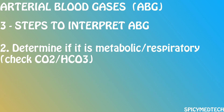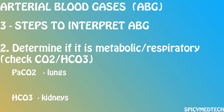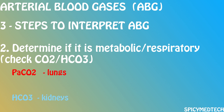Step 2: Determine if it is a metabolic or respiratory alkalosis or acidosis. For this step, we only have to check CO2 and HCO3. Quick recap: PaCO2 is to lungs and HCO3 is to kidneys; more CO2 means more acidic, and more HCO3 means more alkaline. If PaCO2 is abnormal along with the pH while HCO3 is normal, the problem is respiratory. But if CO2 is normal while the pH is abnormal along with the HCO3, the problem is metabolic.